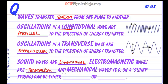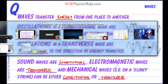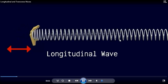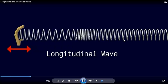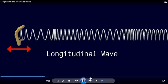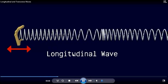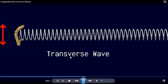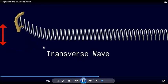Mechanical waves, for example on a slinky spring, can be either longitudinal or transverse — as shown in the demonstrations here, where we have a longitudinal wave on a slinky spring and a transverse wave where it's moving at right angles.